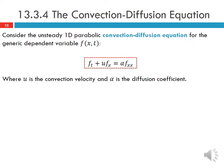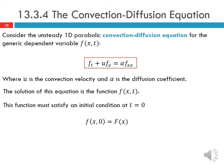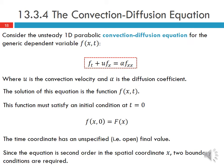Now let's consider the unsteady 1D parabolic convection diffusion equation for a generic dependent variable f of X and T, adding the convection term. U is the convection velocity and alpha is the diffusion coefficient. The solution f(x,t) must satisfy an initial condition at T equals 0, written as f(x,0) equal to f(x). The time coordinate has an unspecified or open final value, and since the equation is second order in the spatial coordinate X, two boundary conditions are required.